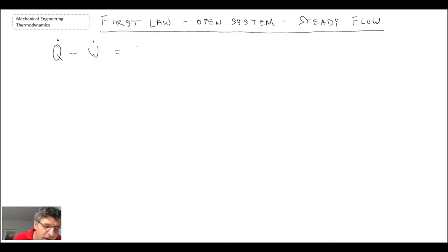On the right-hand side of the equation, we have mass flux leaving the system multiplied by three terms: the enthalpy, the kinetic energy, and the potential energy.